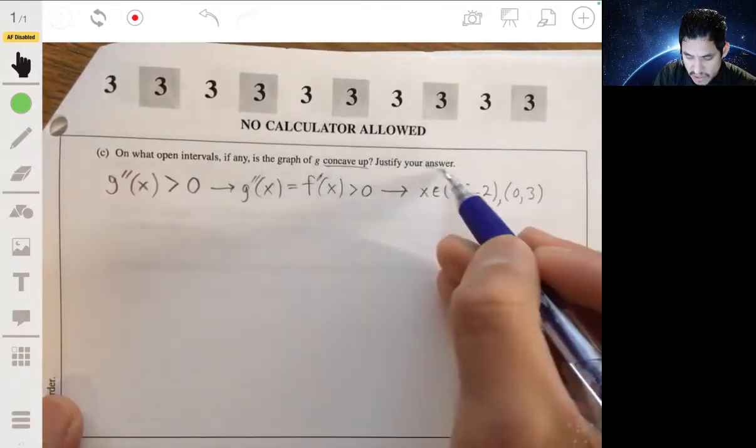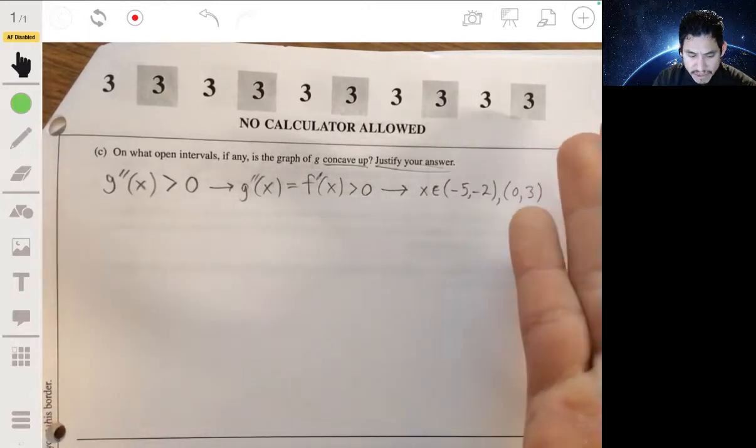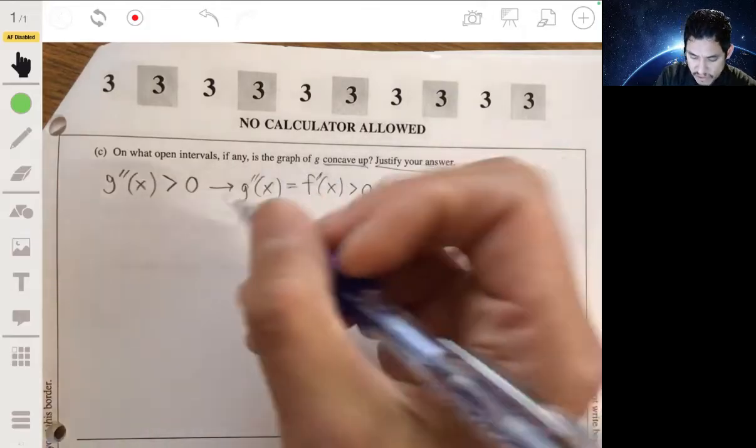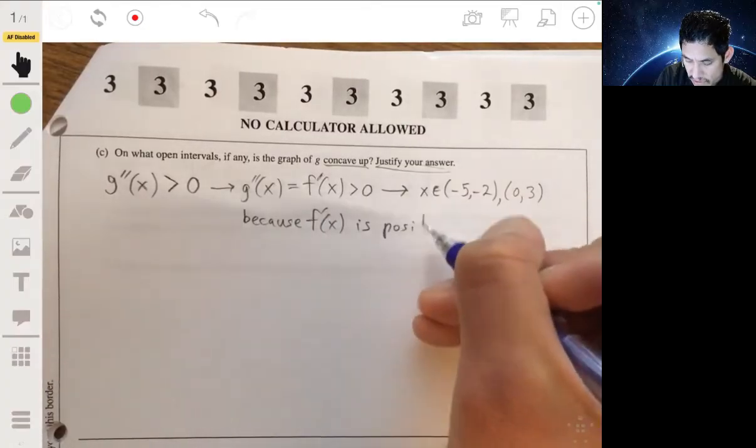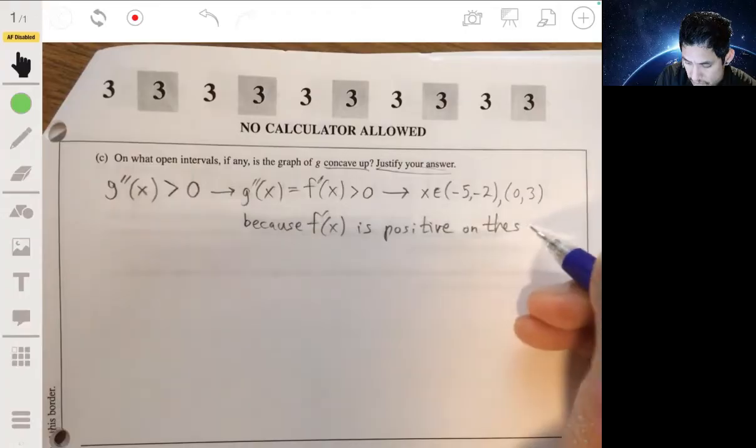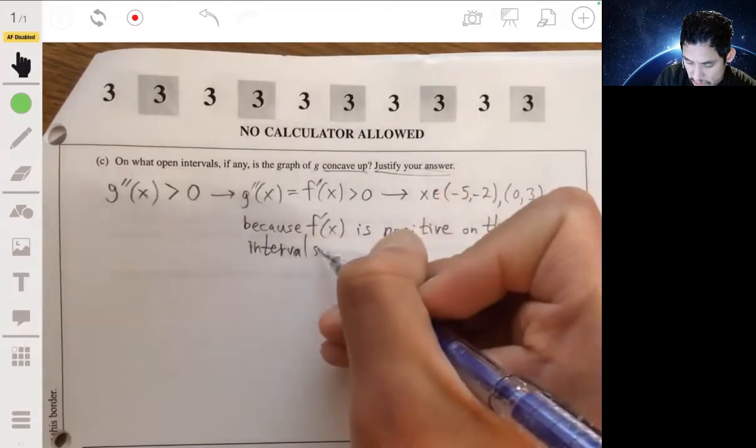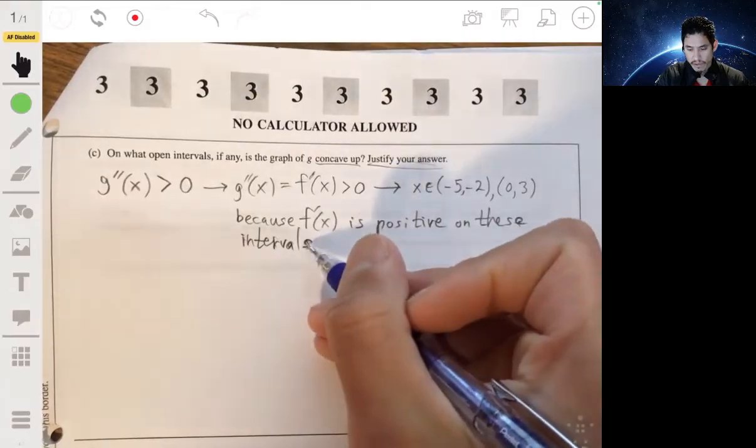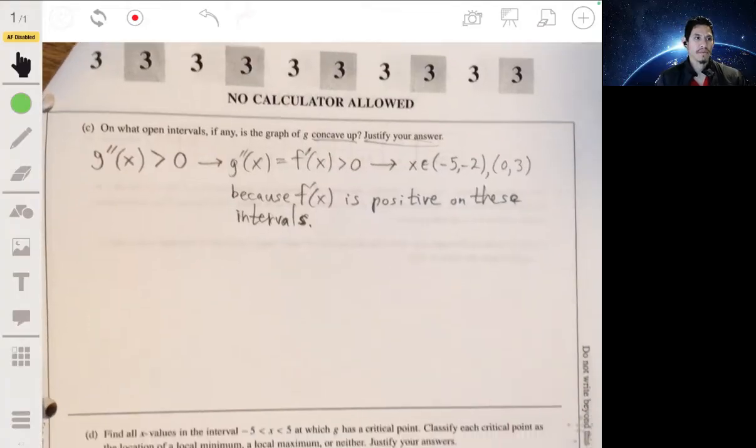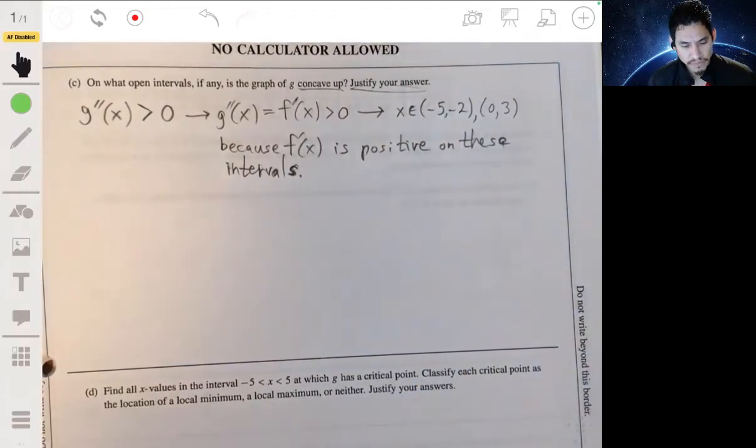So then our answer would be on the interval, negative five to negative two, and zero to three. And it's saying justify your answers to just keep your explanation simple. That's my advice. Keep it simple. Don't write too much. Simply say something like, I would simply say because the slope of f is positive on these intervals. Or you can just say because f prime of x is positive on these intervals. Don't try to write and add to an explanation because you feel that you have to sound or use high-level calculus terms. Just keep it simple. The graders want to, you know, they're graders. They're people. People like simple explanations. So always try to focus on keeping your answers and explanations straight to the point.